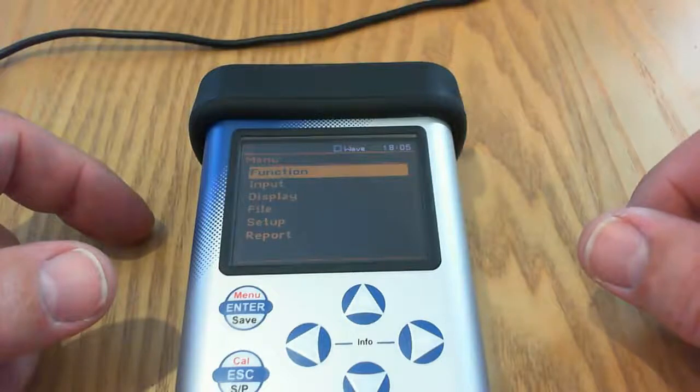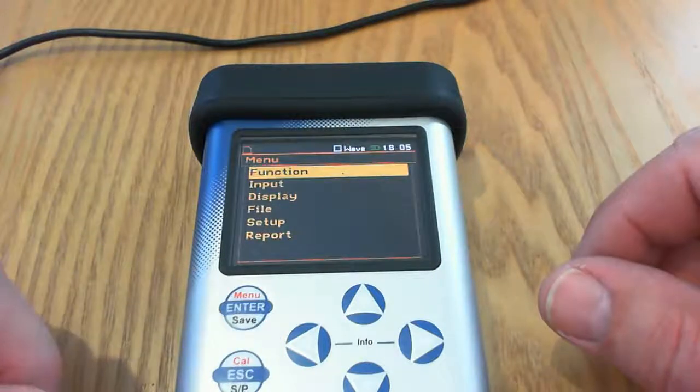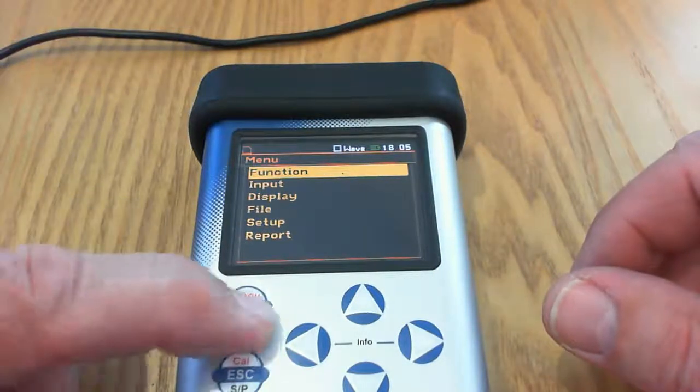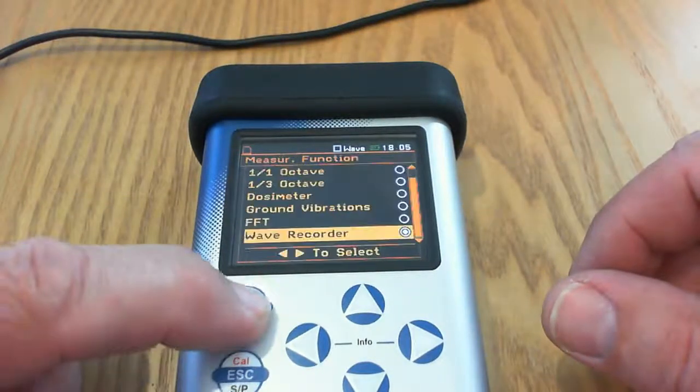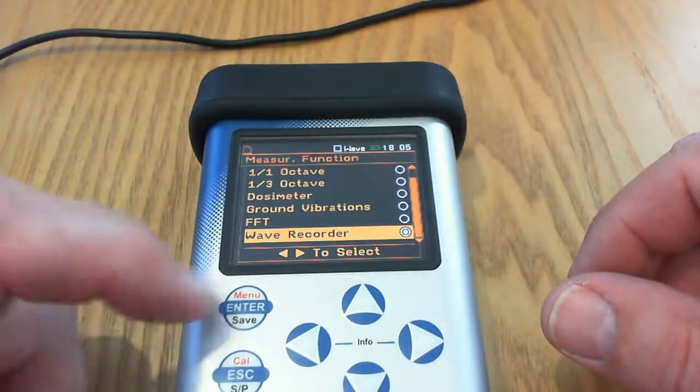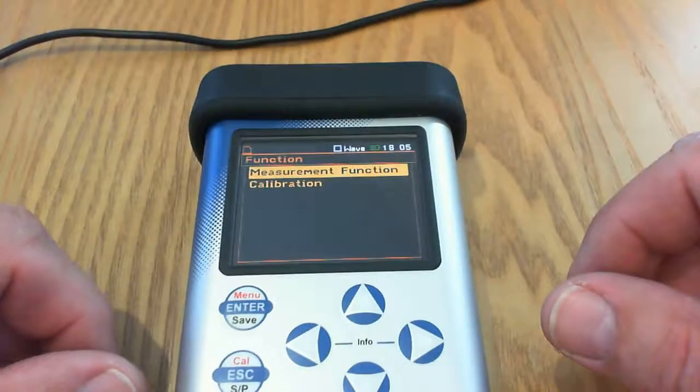First thing we need to do is get the analyzer into wave recorder mode, so we go into the function menu and choose the wave recorder option, assuming it's installed and ready to go. Press enter to accept that.